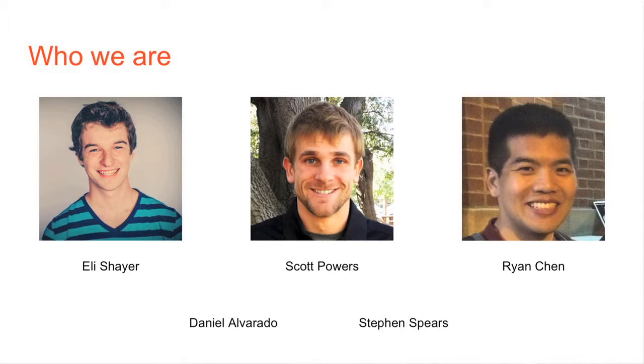Starting out with who we are, my name is Eli Shayer. I'm a sophomore at Stanford University studying mathematical and computational science. I'm a member of the Stanford Sports Analytics Club, and this year I'm the technology officer for the club. I'm Scott Powers, the co-president of Stanford Sports Analytics Club, and I'm also a PhD student in statistics at Stanford. My name is Ryan. I'm a first year PhD student in management science and engineering. There are actually two other people on the team who are not here today, freshmen Daniel Alvarado and Steven Sears, but they were not able to make it. So the five of us worked on this project.